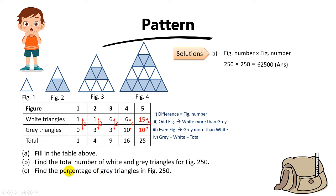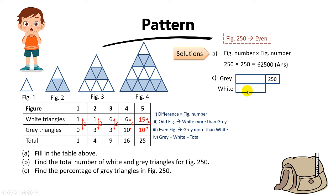For part C, the killer question: find the percentage of grey triangles in figure 250. To find the percentage, we need the number of grey and white triangles. First, notice that 250 is an even number, so the grey triangles are more than the white triangles by 250 — because the difference equals the figure number. The total triangles is 62,500, the answer from part B.